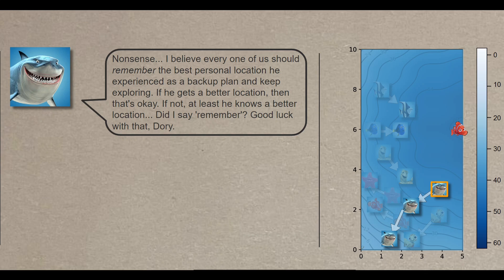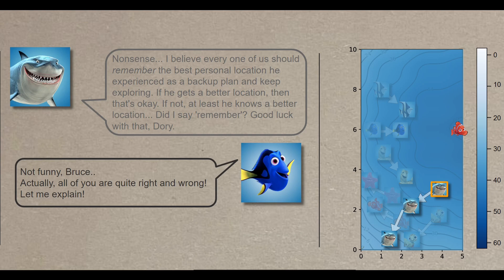Good luck with that, Dory. What Bruce is trying to say here is that these are his three locations, starting from the orange square. His first location happened to be his best location, as it coincides with a deeper, darker cell. Not funny, Bruce. Actually, all of you are quite right and wrong.